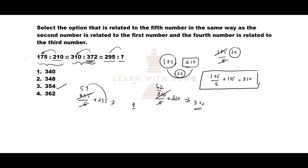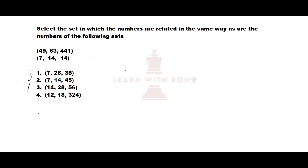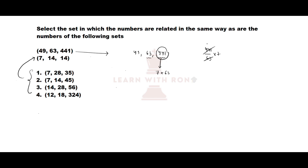Let us see our next question. Here we need to find a set from the given options which follows the same pattern as the above two sets. First let us take the first set, which is 49, 63 and 441. Observe that 441 can be written as 63 times 7. So 441 divided by 63 into 7 — 63 sevens are 441, and 7 sevens are 49, which is the first number. So the pattern is: 3rd number divided by 2nd number, multiplied by 7, gives the 1st number.